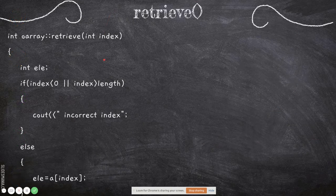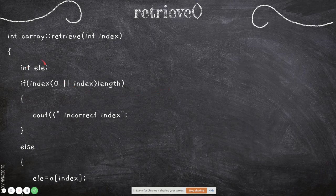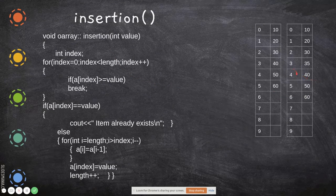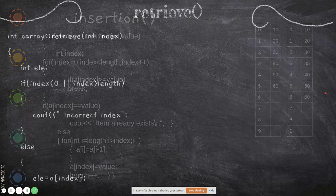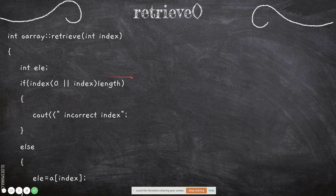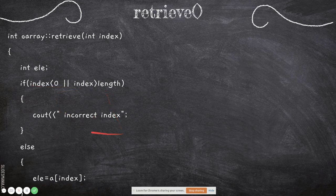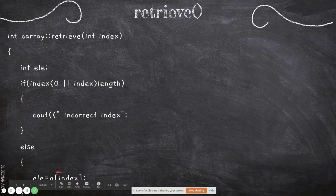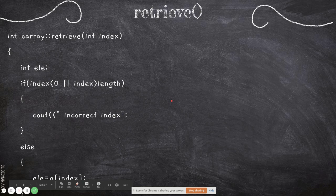'retrieve' extracts a value at a particular index. We declare a local variable 'element', then pass the index. For example, to see the fourth element: we check that the index is valid — it must not be negative and must not exceed the length. If valid, 'element' is set to a[index], which is a[4] = 40 in our example. That value is stored in 'element' and returned to the calling program.